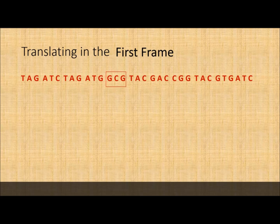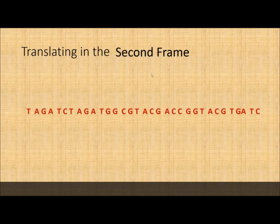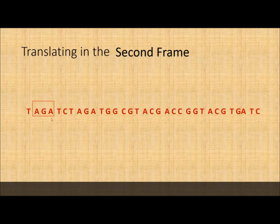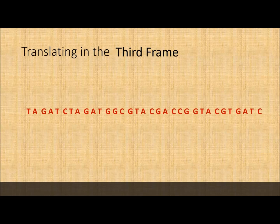If you translate by a shift — meaning you're translating from the second frame — you exclude the first nucleotide and shift accordingly. Whatever amino acid you get from AGA is the result of that translation. If you do a translation in the third frame, or frame shift by two, the first two nucleotides (T and A) are ignored and you translate starting from GAT.